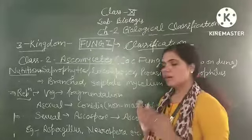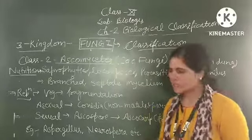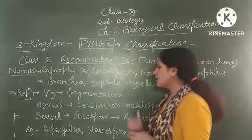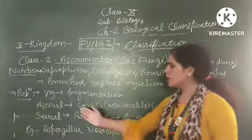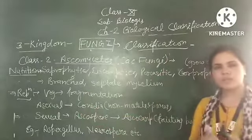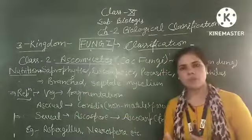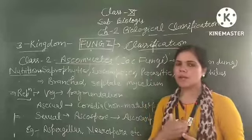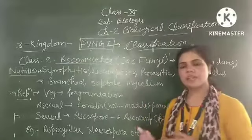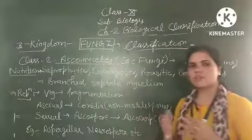If you will talk about reproduction, all three types of reproduction are present here. In vegetative reproduction, it is of fragmentation type. In asexual reproduction, formation of spores is present and the spores are conidia which are non-motile spores. In sexual reproduction, plasmogamy occurs first and after that karyogamy occurs.